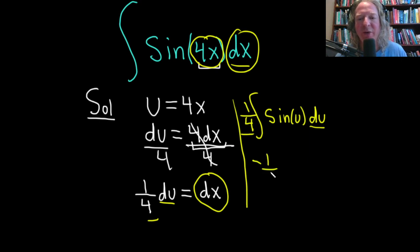This is negative 1/4 cosine of u, plus our constant of integration, capital C.